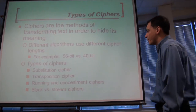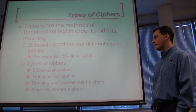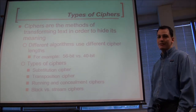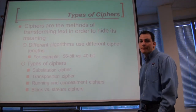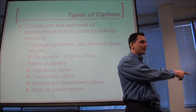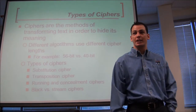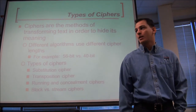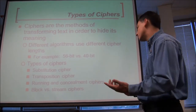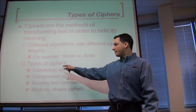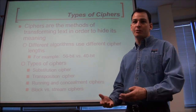Different algorithms use different cipher lengths. You've got substitution ciphers and transposition ciphers. Substitution: imagine taking you out of this class and someone else comes in to take your place — that's substitution. On a football team, one player gets taken out and another gets taken in. In cryptography, you're replacing one alphabet with another — like the Caesar cipher.